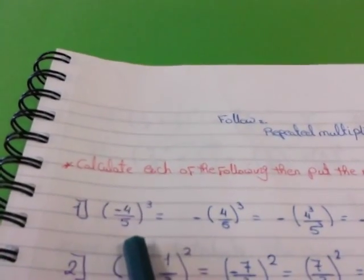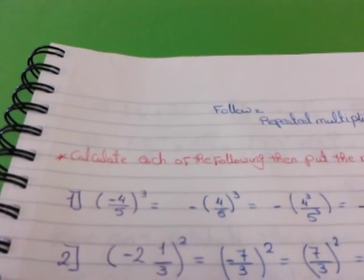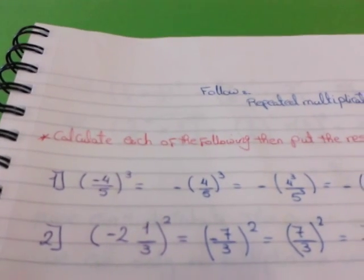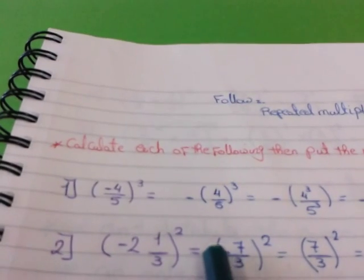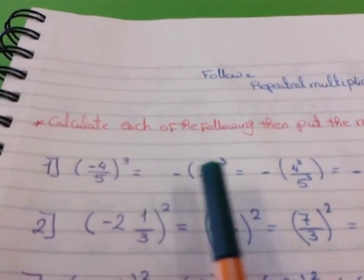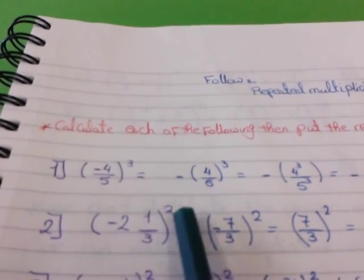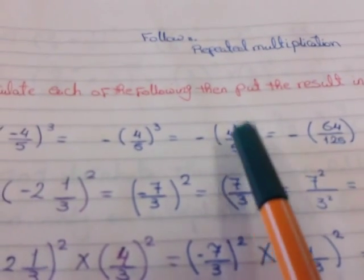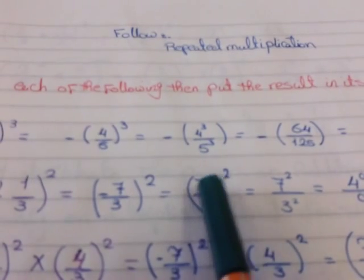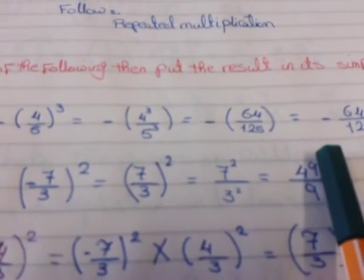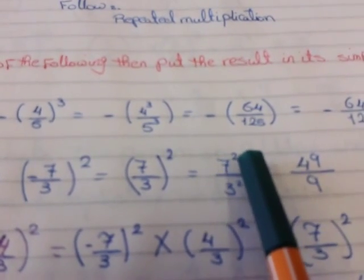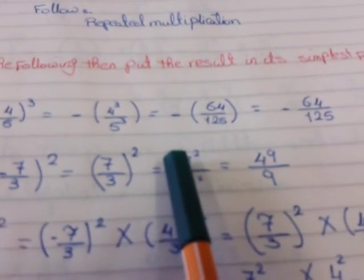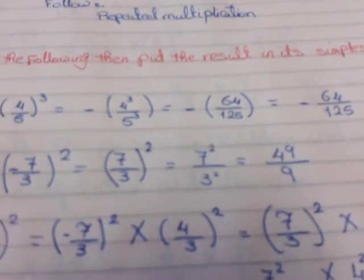Number 1: negative 4 over 5, all to the power 3. First, the power is odd, so it will send the negative sign out. I will put the negative sign out and write between two brackets 4 over 5 all to the power 3. Then I will distribute the power 3: 4 power 3 over 5 power 3. 4 power 3 gives me 64 and 5 power 3 gives me 125. I will put this fraction in the calculator to check it is in simplest form.